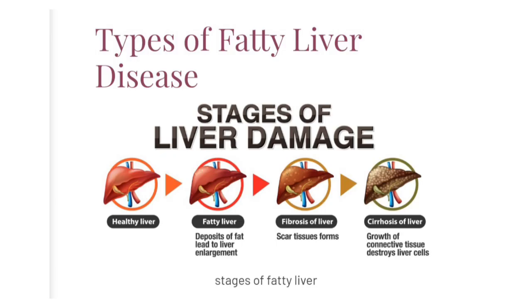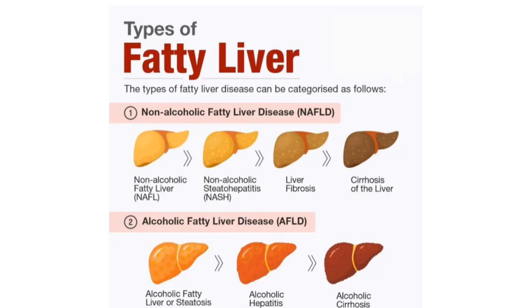There are two types of fatty liver: alcoholic and non-alcoholic. Alcoholic fatty liver can damage the liver, impairing its ability to break down fats, causing fat to build up and leading to scarring and damage. Non-alcoholic fatty liver disease is quite common as well, and usually represents an imbalanced diet or an underlying problem that affects the liver.